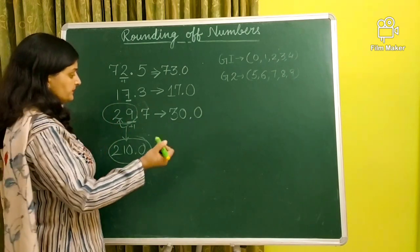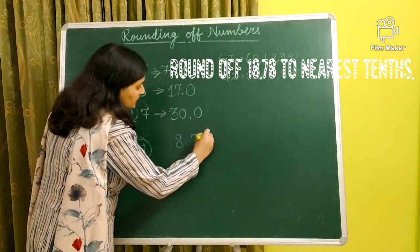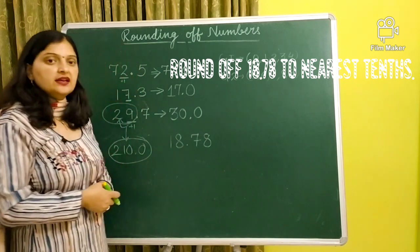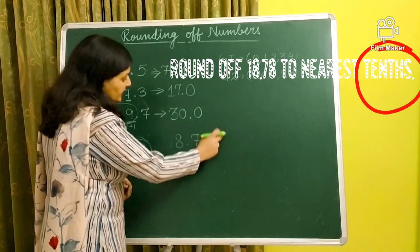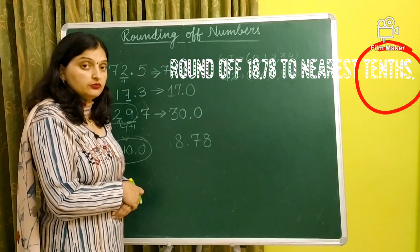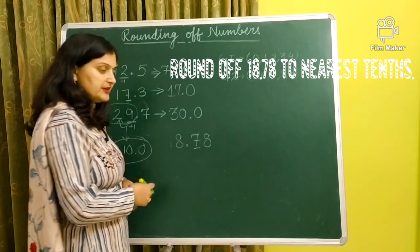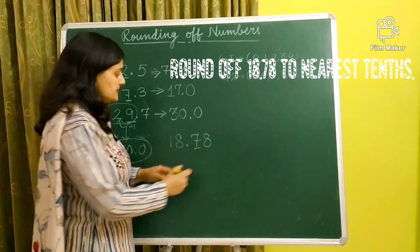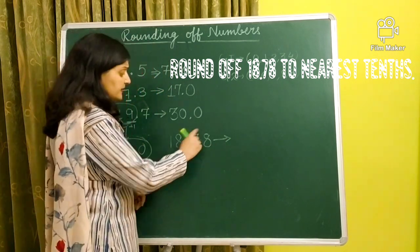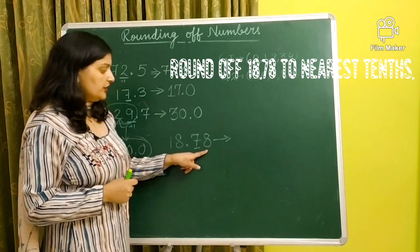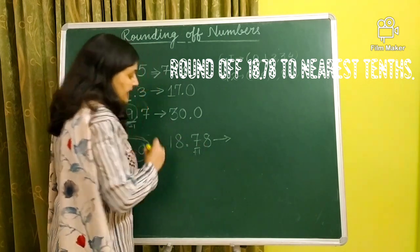Now, let us take few more examples. Our next question is, round 18.78 to nearest tenth place. So you have to round this number to the tenth place. So you see, which number has the place that is tenth, which comes after decimal, tenth place. Or after that comes hundred place. So you've underlined it. Now, which one to look at? The digit which is immediately right. Who is that? Eight. So eight belongs to the second group. It means we will add one to the underline digit.